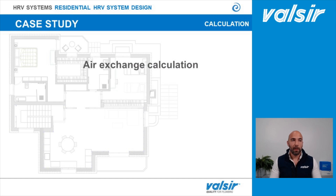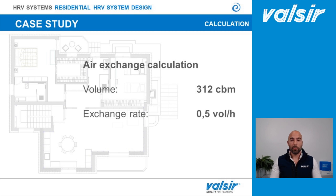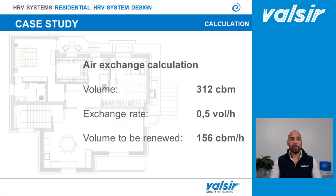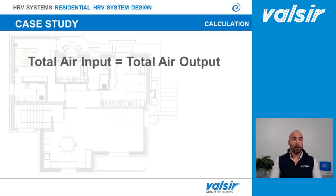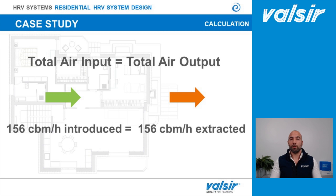Now we do some simple math to find the right air volume to change. We have a 312 cubic meter apartment and an air exchange ratio of 0.5 volume per hour, giving a total volume to be renewed of 156 cubic meters per hour. To balance the whole system, the total air introduced into the apartment must equal the total air extracted — so we both introduce and extract 156 cubic meters per hour.